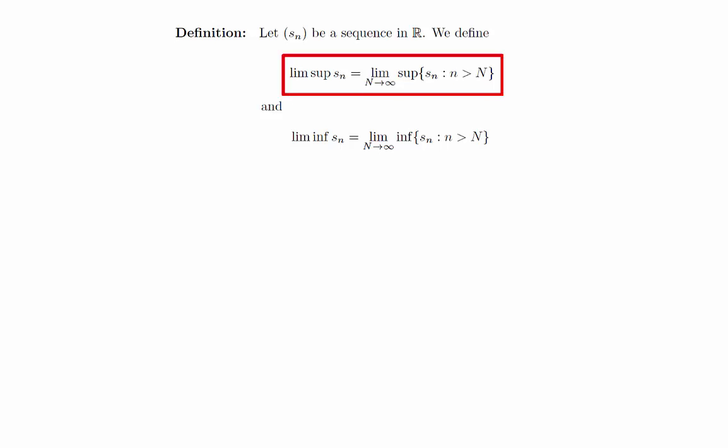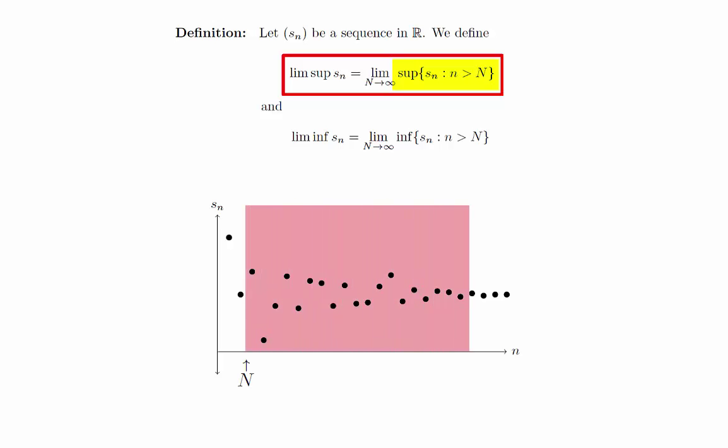We will focus on lim sup s_n. We can see that this is the limit of a sequence built from the suprema of certain sets. Let's take a look at what all of this means. Here is an image of a sequence. What is the set {s_n : n > N}? If we pick some value N, we are looking at all the terms in the sequence that come after that point. We want the supremum of this set, which is the least upper bound.